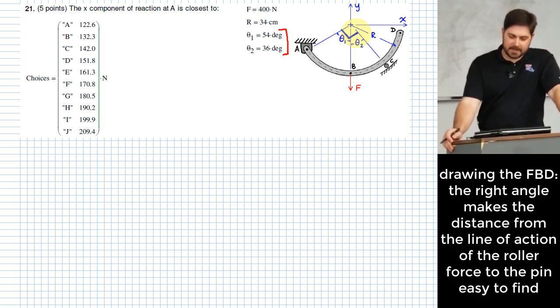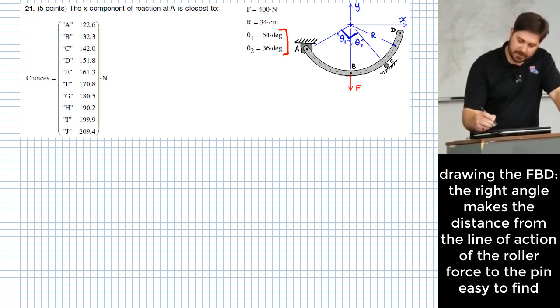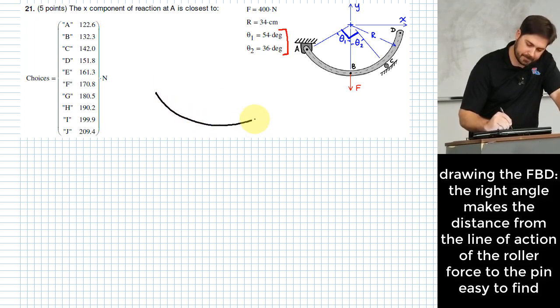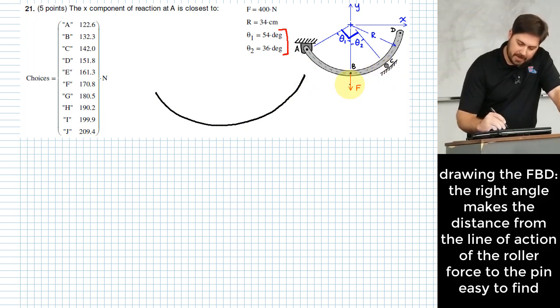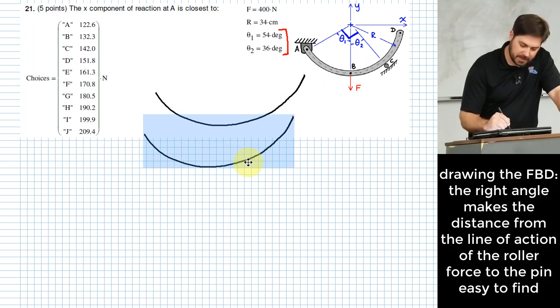Well, if that's the case, then how does the line of action, like if you were, I guess, tell you what, we'll go ahead and draw this little free body diagram real quick of this little piece. What is the line of action of the roller at C, you know, where does it go?